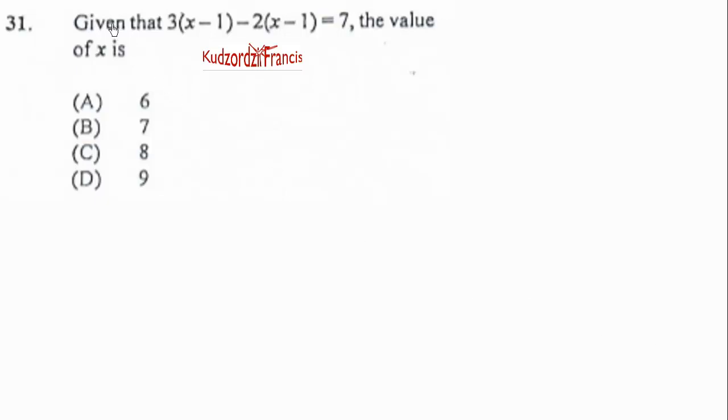Question 31. Given that 3(x - 1) - 2(x - 1) = 7, the value of x is.